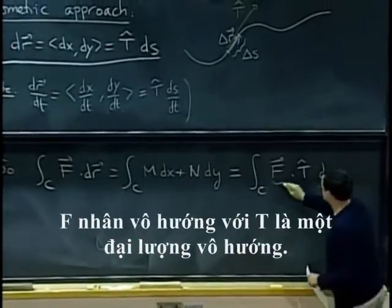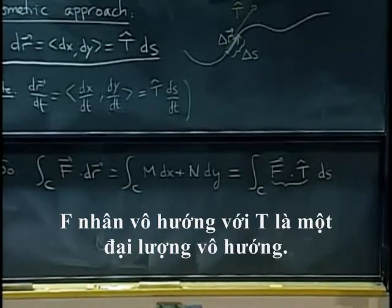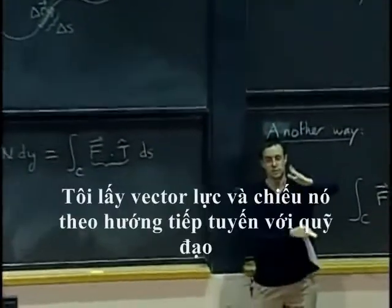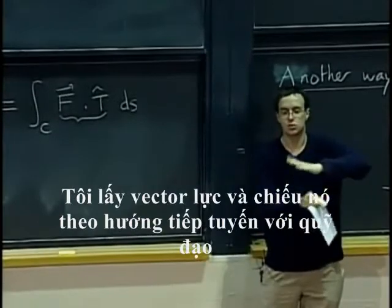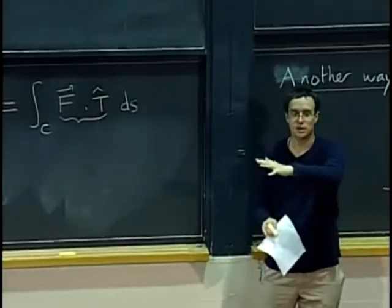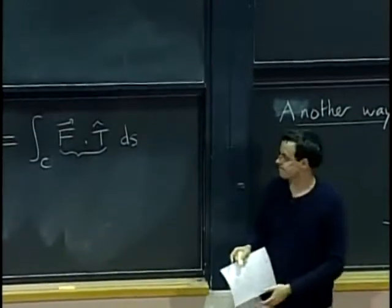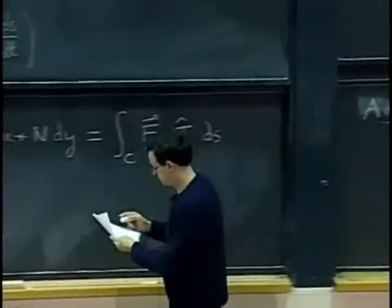So now you can think of this, f dot t is a scalar quantity. It is the tangent component of my force. So I take my force and I project it to the tangent direction to the trajectory. And then I integrate that along the curve. It is still the same thing.